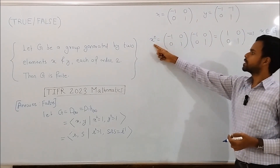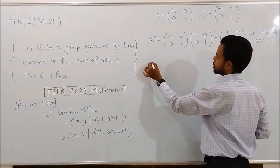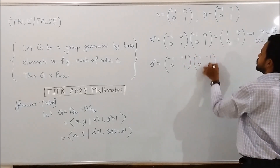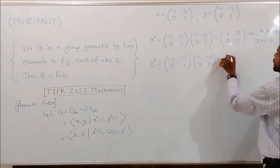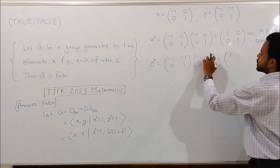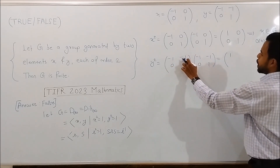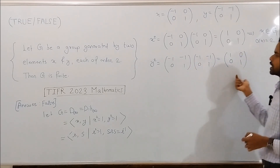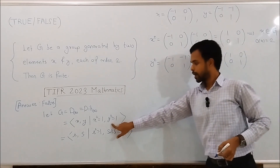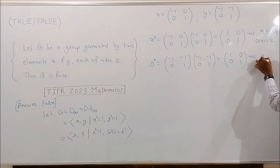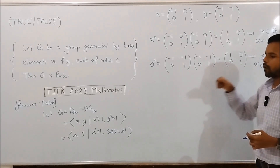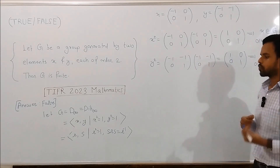Now consider y². First row into first column gives 1; first row into second column: (−1)(−1) + (−1)(1) = 0; second row into first column gives 0; second row into second column gives 1. So y² is again the identity matrix. This implies y belongs to G and the order of y is 2, because 2 is the least positive integer such that y times y is identity. So we have found two elements x, y of G such that x² = identity and y² = identity.